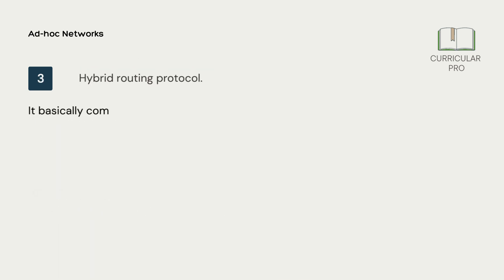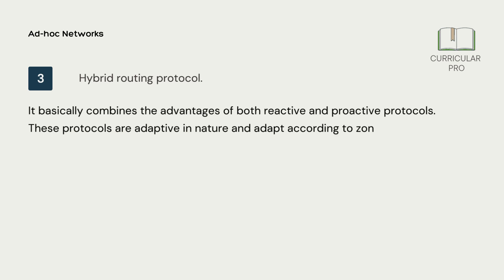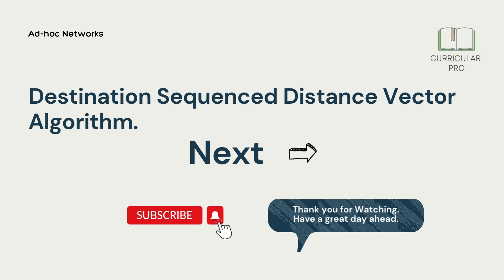Number 3, hybrid routing protocol. It basically combines the advantages of both reactive and proactive protocols. These protocols are adaptive in nature and adapt according to zone and position of source. In the next video we will be learning about the destination sequence distance vector algorithm.